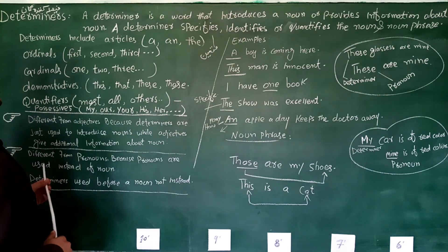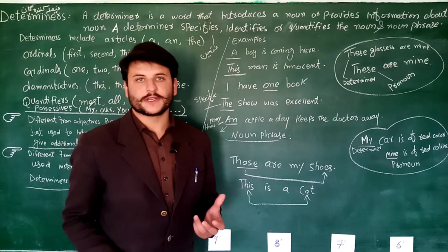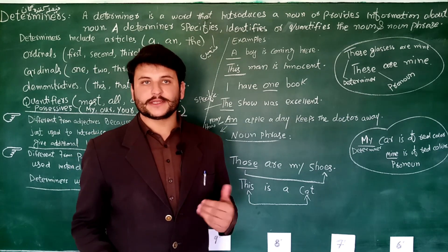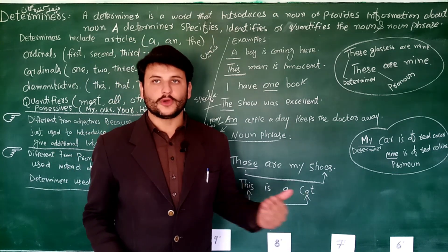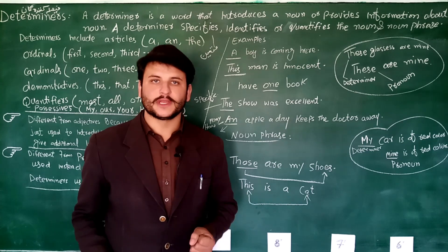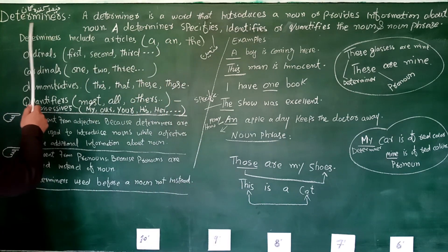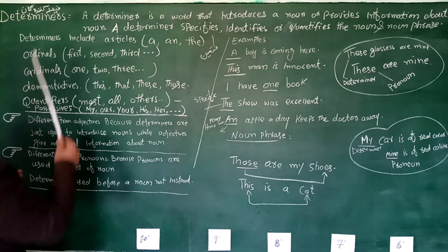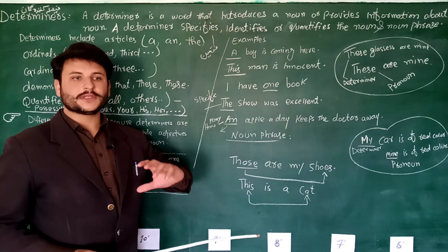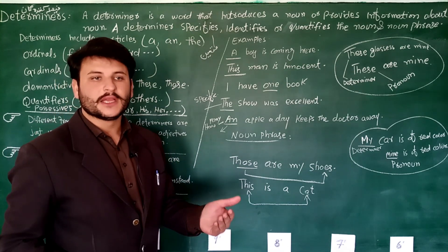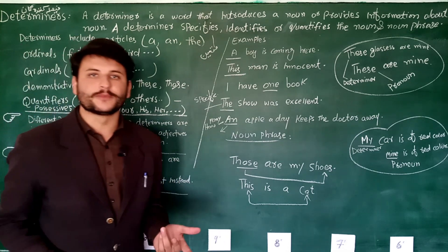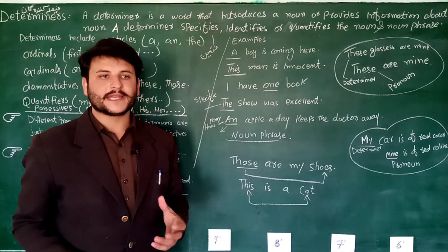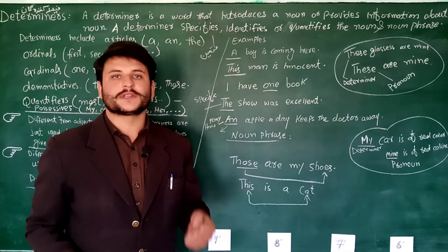Dear students, jaisa ki humi pata hai ki determiner - most of the people and most of the students are unaware of understanding determiners, that what are they, what the term determiner is. So let's have a brief recognition and introduction towards determiners. Determiners ki Urdu mein agar hum baat karen, to is ki jo mani hai wo hai 'faisala karne wala' - which predicts something, which identifies something. Determine - malum karna, faisala dena. We can use it in different contexts, but here in English grammar it has its own identification and recognition in the very basic units of grammar.